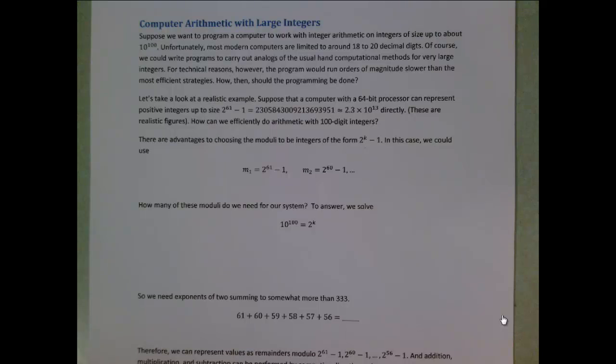Let's take a look at a realistic example. Suppose a computer with 64-bit processor could represent positive integers of a size up to around 2 to the 61 minus 1. That number is about 2.3 times 10 to the 13th. Notice, if we're trying to work with integers up to the size of around 10 to the 100, we can't do this directly in hardware. How could we efficiently do the arithmetic on 100-digit integers? What we can do is start representing our integers as remainders on division by multiple moduli, just as we did in the previous section.